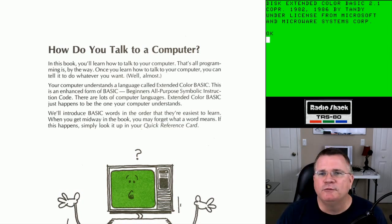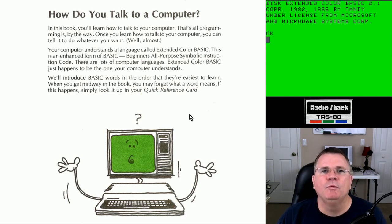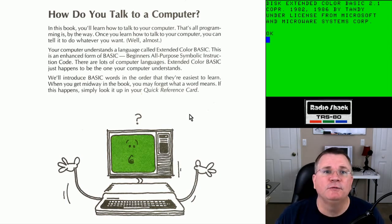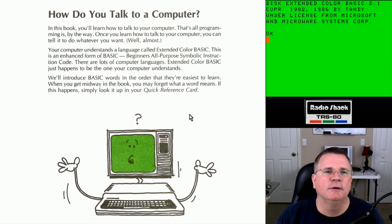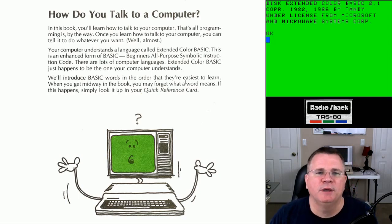We're going to go through Chapter 1. There are a total of 34 chapters in this book. How do you talk to a computer? In this book, you'll learn how to talk to your computer. That's all programming is. Once you learn how to talk to your computer, you can tell it to do whatever you want — well, almost. We'll introduce basic words in the order that they're easiest to learn. When you get midway in the book, you may forget what a word means. If this happens, simply look it up in your quick reference manual.